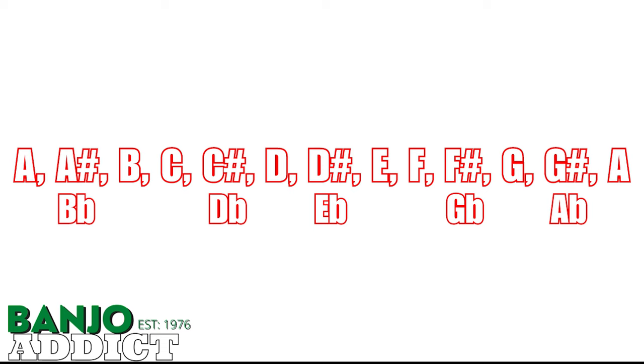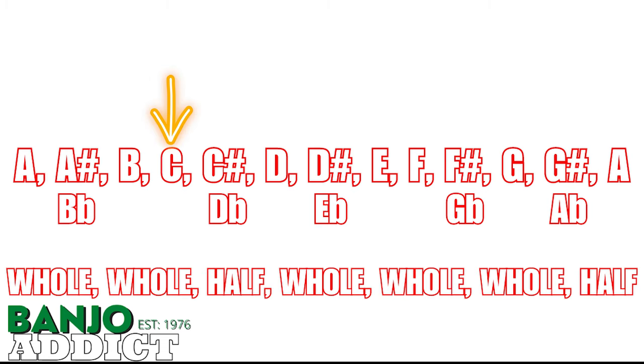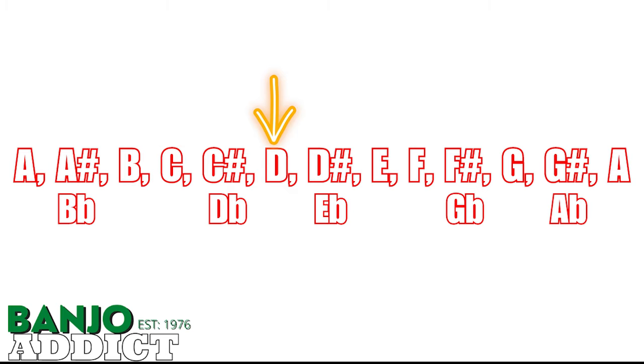Let's look at the C major scale. If you start with the C and use the whole, whole, half, whole, whole, whole, half pattern, you'll go from C to D, which is a whole step, D to E, which is a whole step, E to F, which is a half step, F to G, which is a whole step, G to A, which is a whole step, from A to B, which is a whole step, and then B to C, which is a half step.